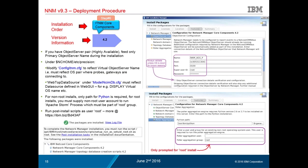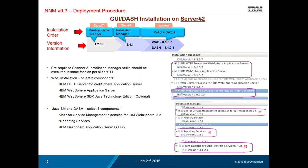A new requirement in ITNM 4.2 is Python for Apache Storm. If you are a non-root user, the installer only asks for the Python path for validation. If you are a root account, you additionally need a non-root account that will be used to start and stop the Apache Storm process.